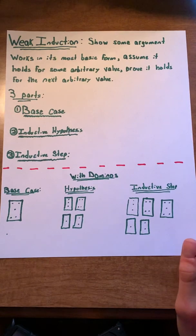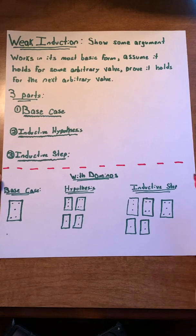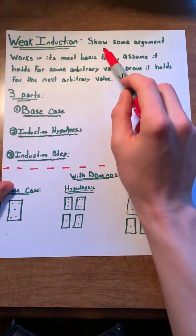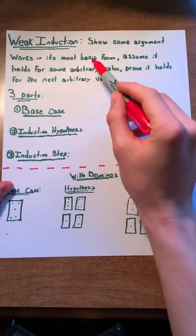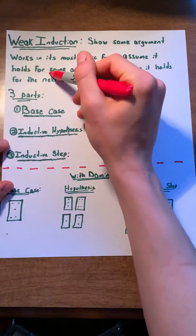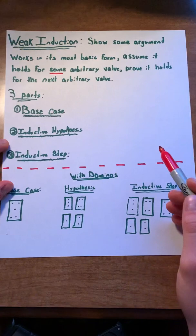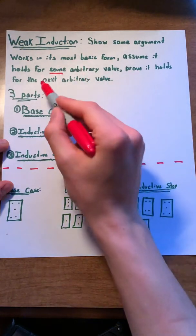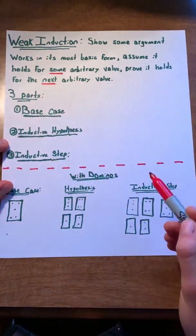In words, weak induction can be described as follows. We're going to show that some argument works in its most basic form. We then assume it holds for some arbitrary value and prove it holds for the next arbitrary value.